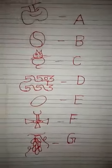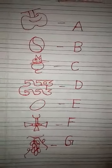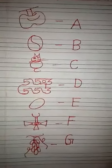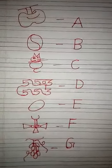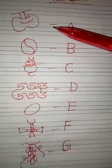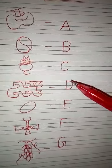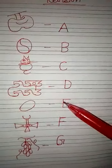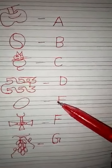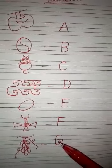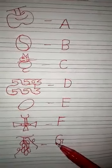Okay. So these many letters you will write in your copy. Very good. This is A for apple. B for ball. C for cat. D for dog. E for egg. F for fish. And G for grapes.